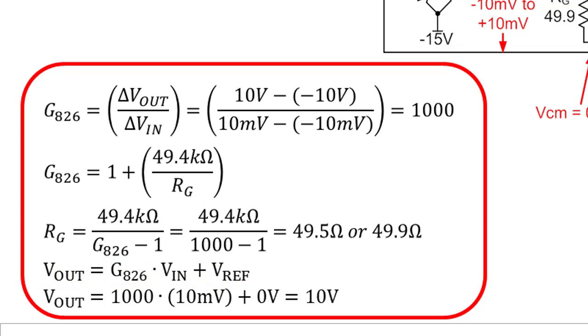In this case, the input and output are both symmetrical, so no offset shift is required. Plugging the values into the equation for a 10 millivolt full-scale input signal, you can see that the output is 10 volts as expected.